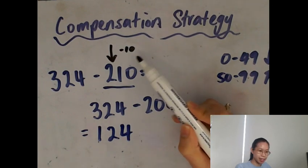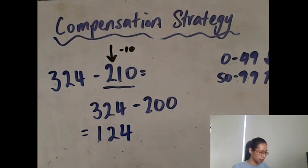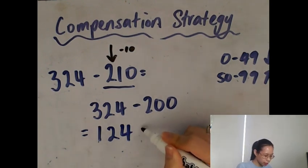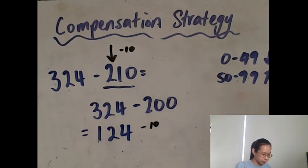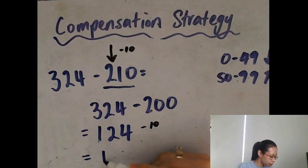Now because we have minus 10 on this side, we are going to do the same thing to the other side of the equation. I'm going to do minus 10, and 124 minus 10 is 114.